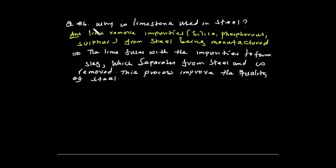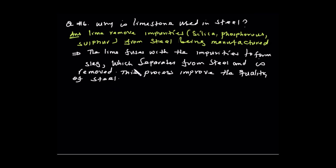This is exercise 5.2. Question number six: why is limestone used in steel production? Limestone is used to remove impurities. The limestone reacts with impurities to form slag, which is separated and removed from the steel, improving its quality.